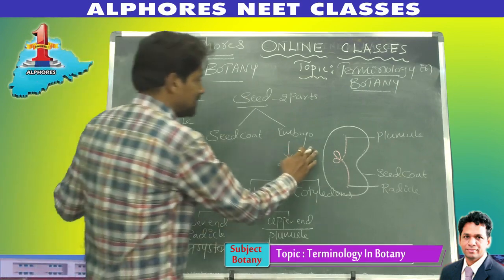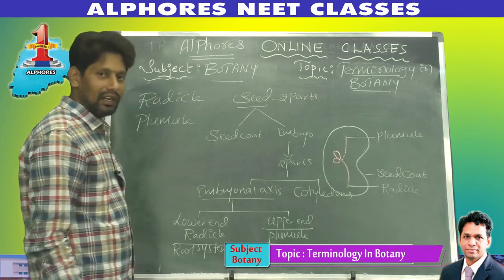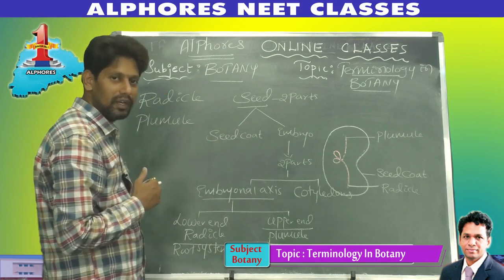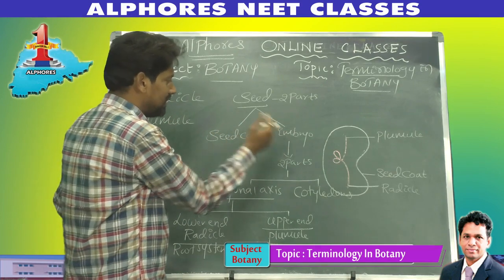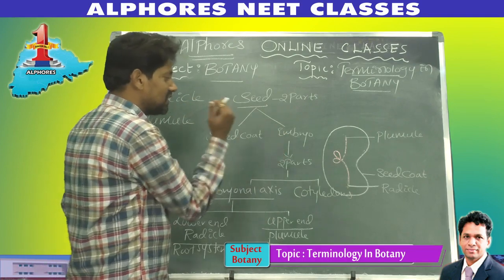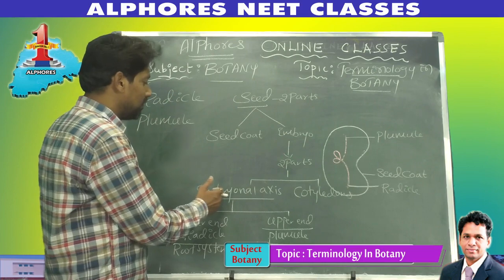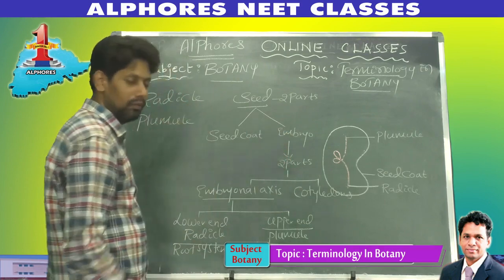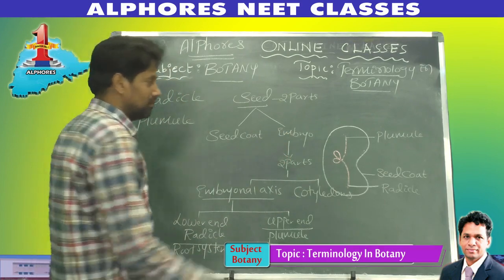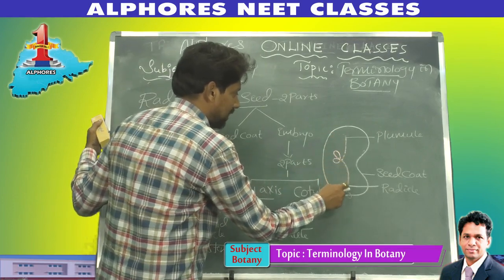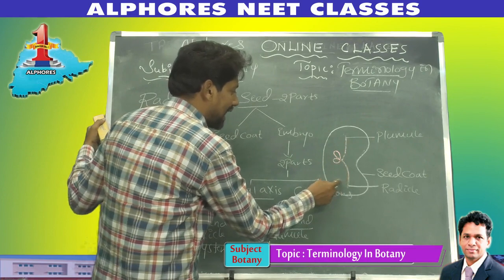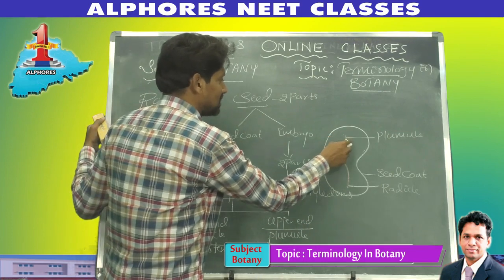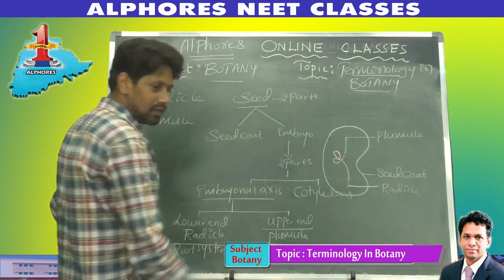This is a seed. A seed has two parts: seed coat and embryo. Embryo has two parts: embryonal axis and cotyledons. The lower end of the embryonal axis is called radicle, which develops into root system. The upper end is called plumule, which develops into shoot system.